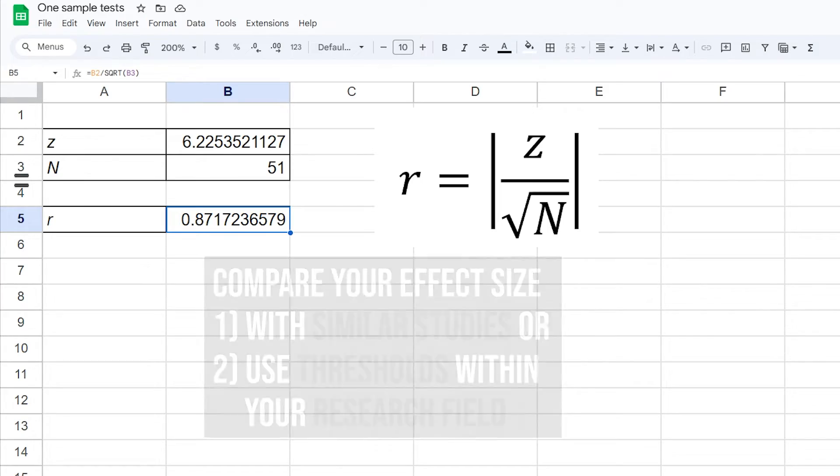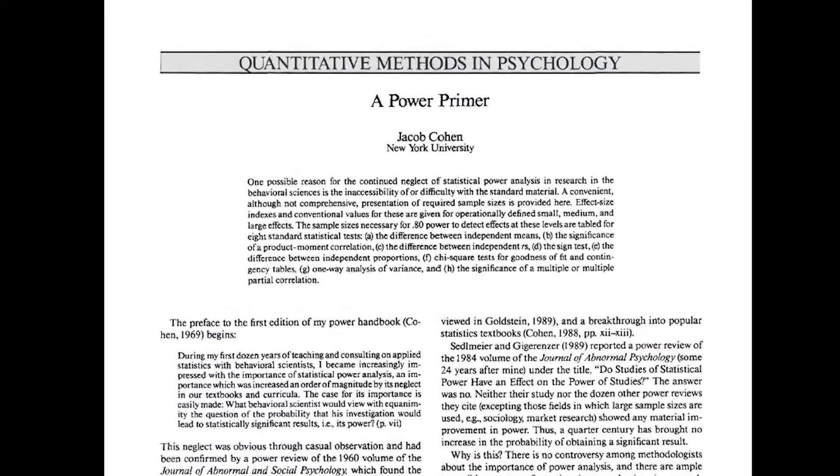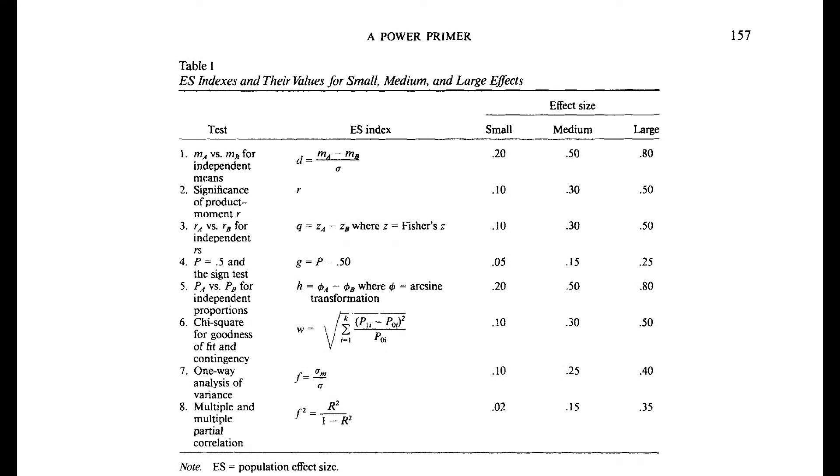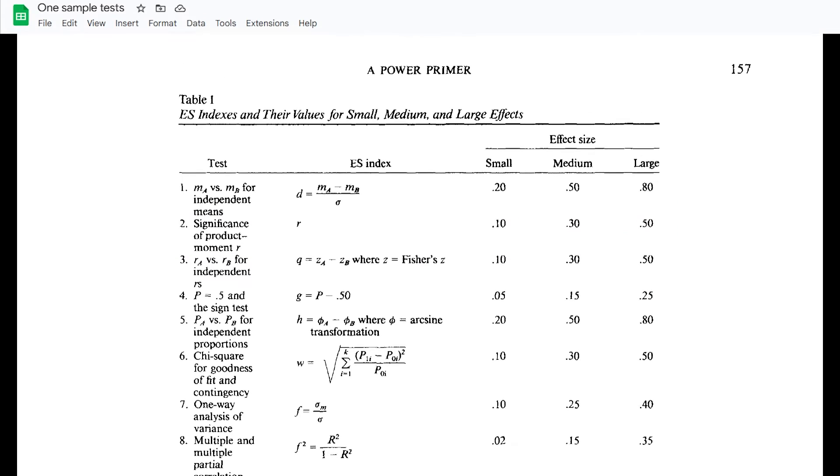If those are also non-existent, you can refer to Cohen 1992, A Power Primer. Page 157 shows three thresholds for the effect size R: 0.1, 0.3, and 0.5 for small, medium, and large effects.